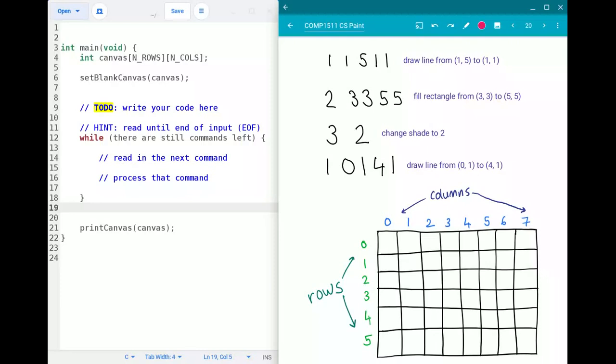So in terms of how you could cope with that something to notice here is that the first number in each command so this one draw line two draw rectangle three change shade this first number tells you how many numbers you're going to need to scan in after that. So for example if the command starts with a one then you know that you're going to need to scan in four more numbers for the start and end coordinates. ScanF can't actually tell the difference between a space and a new line so it would be fine to have one scanF for this number and then a separate scanF for these four numbers that would work just fine.